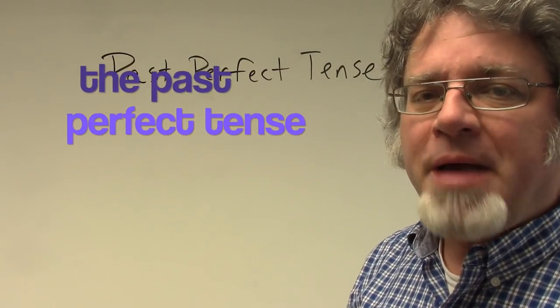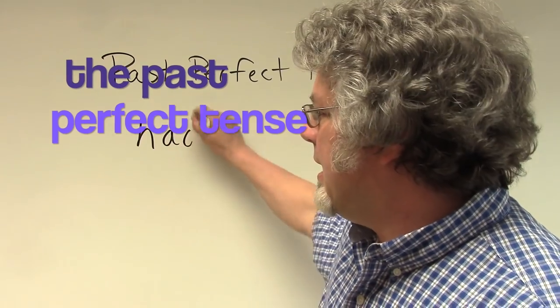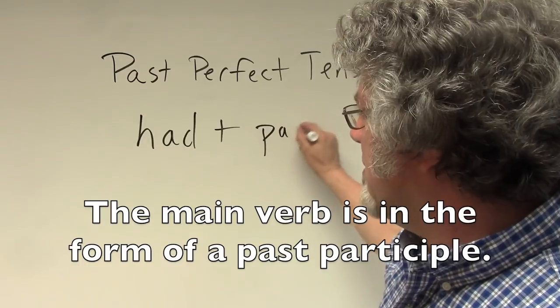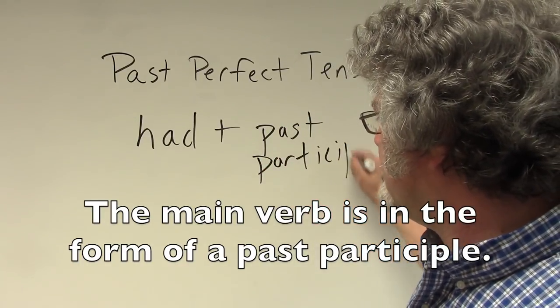To form the past perfect tense, use the helping verb 'had' and the main verb is in the form of a past participle.